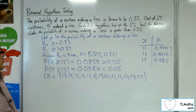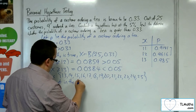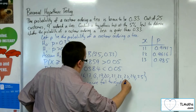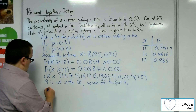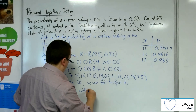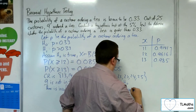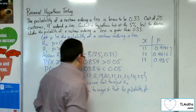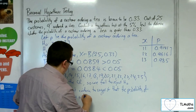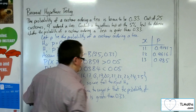9 customers ordered a tea. 9 is not in the critical region, so we fail to reject H0. 9 is not a significant result. There is insufficient evidence to suggest that the probability of a customer ordering a tea is greater than 0.33.